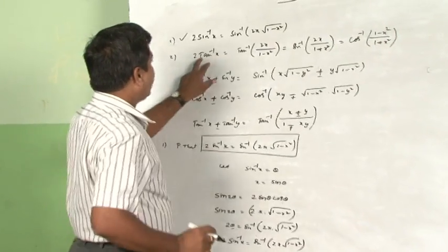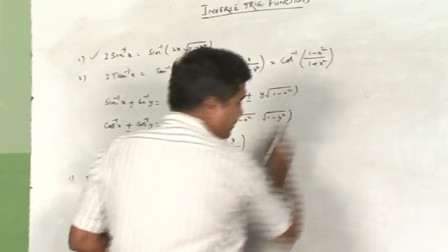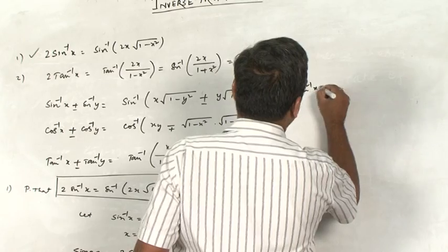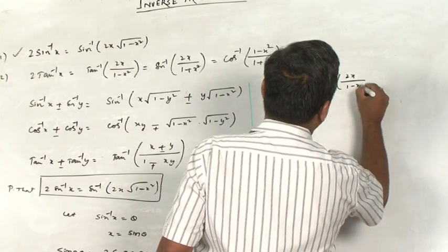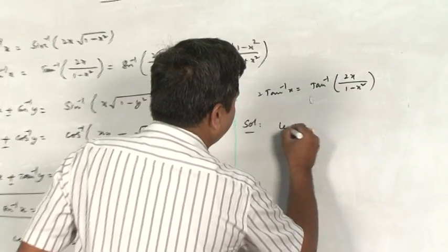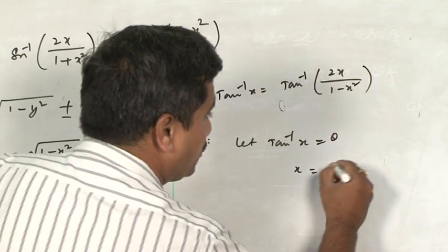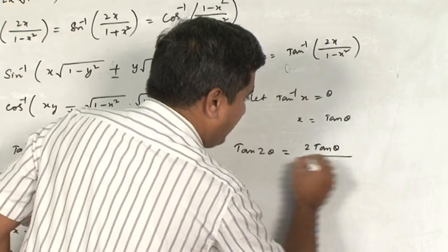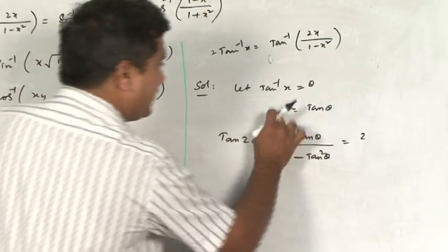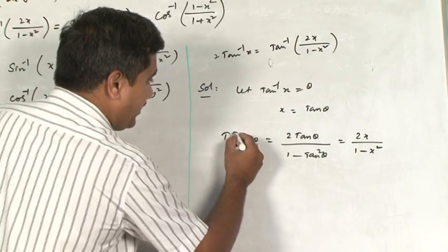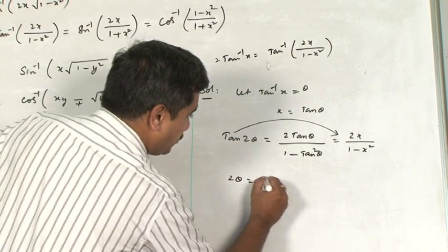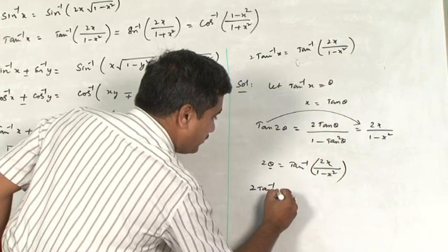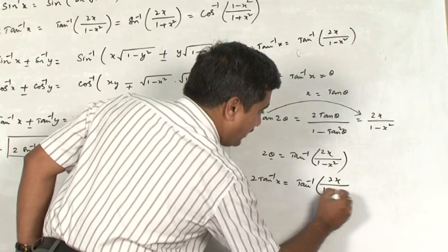Now the second one: prove 2 tan inverse x equals tan inverse(2x upon 1 minus x square). Let tan inverse x equal to theta, so x equals tan theta. The tan 2 theta formula: tan 2 theta equals 2 tan theta upon 1 minus tan square theta. Resulting: 2 tan theta equals 2x upon 1 minus x square. Taking tan to the right side: 2 theta equals tan inverse(2x upon 1 minus x square). Replacing theta with our assumption: 2 tan inverse x equals tan inverse(2x upon 1 minus x square).